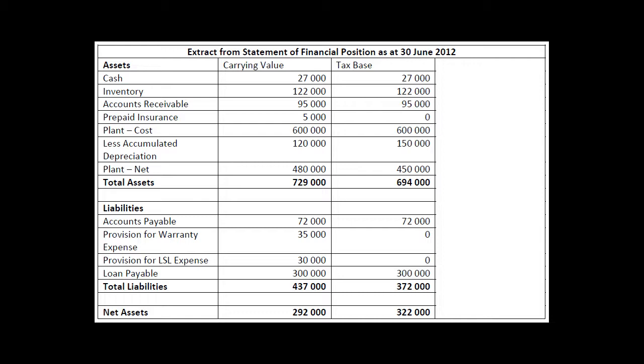For prepaid insurance — even though we've got $5,000 of prepaid insurance sitting there — the tax base of an asset is the amount that will be deductible for tax purposes against any benefits that are coming out. If those benefits will not be taxable, the tax base of an asset is equal to its carrying amount.